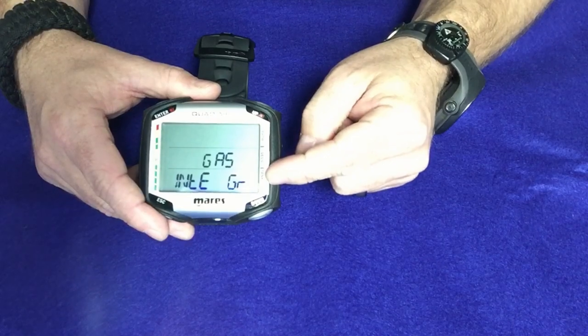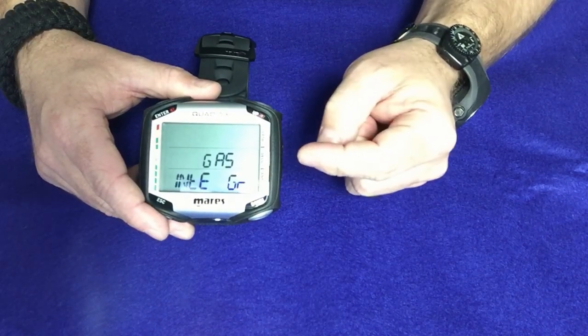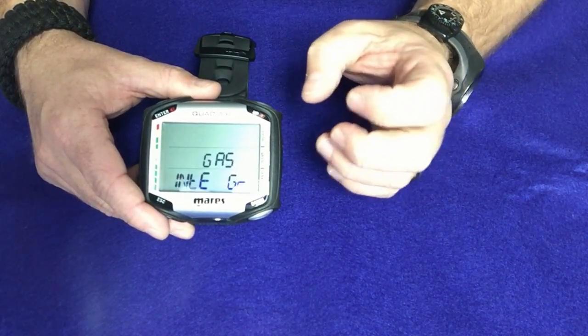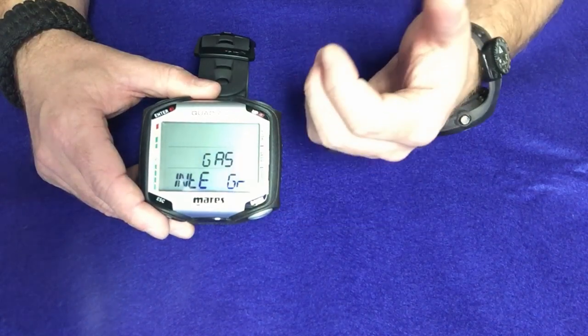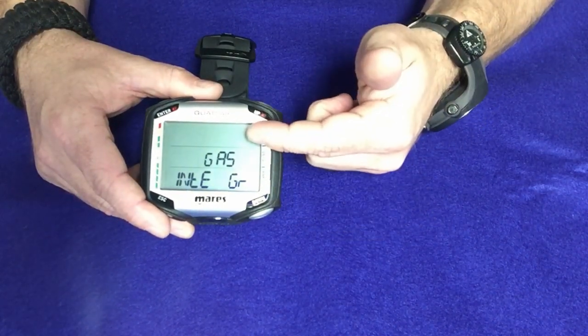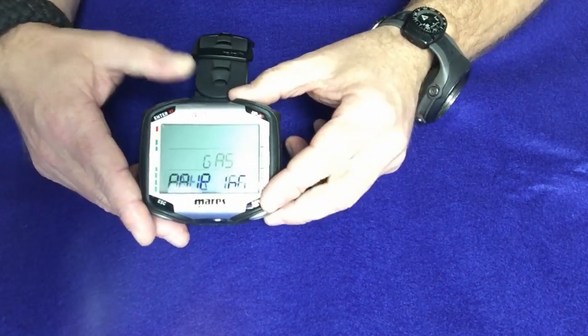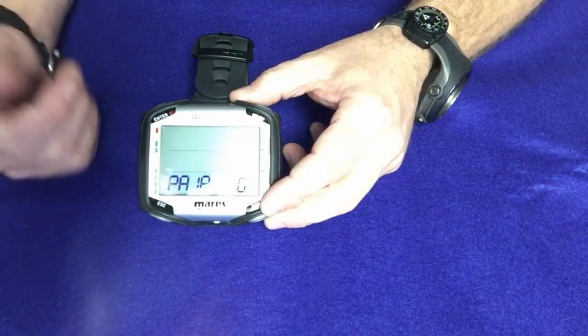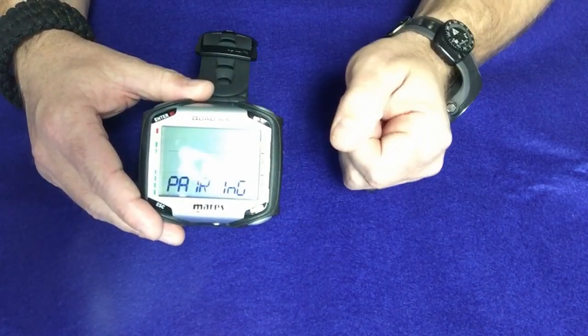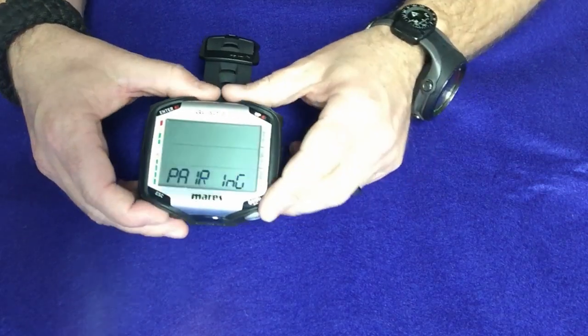Moving on through, now we have the gas integration. Now if you're using the air module that comes with this for air integration, this is where you would actually go in to pair it. And I can simply go into the enter mode, and it will actually pair with the transmitter for this particular computer.